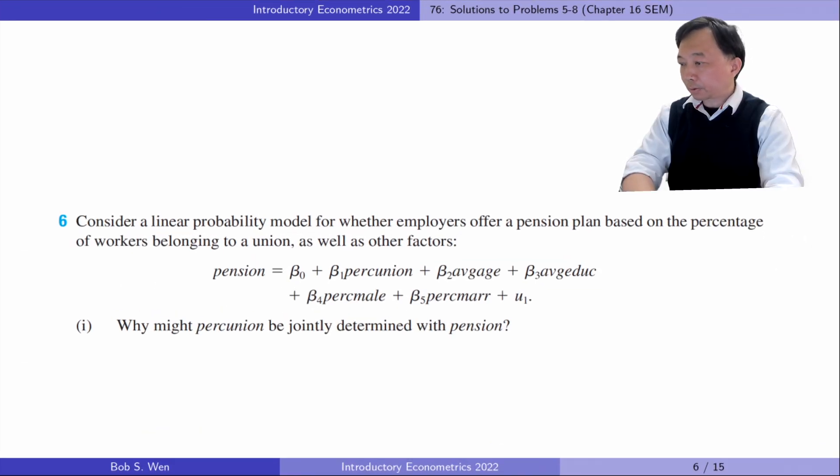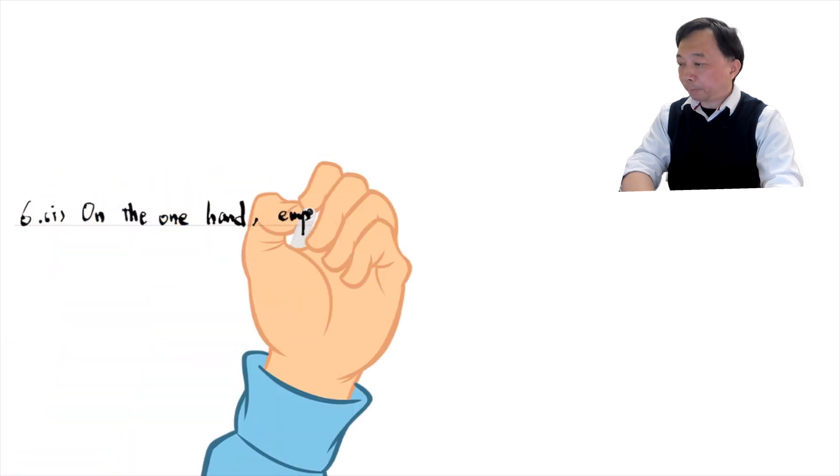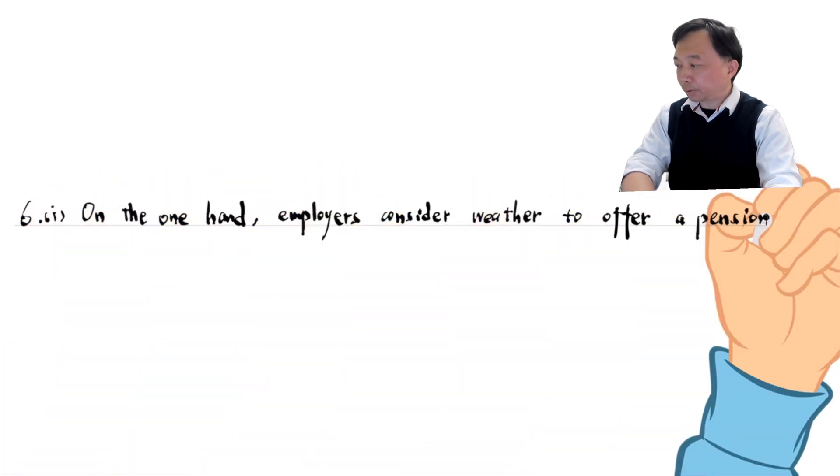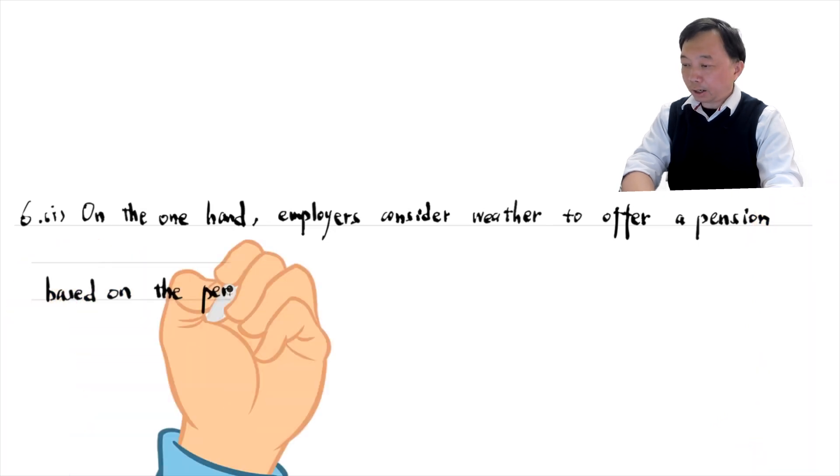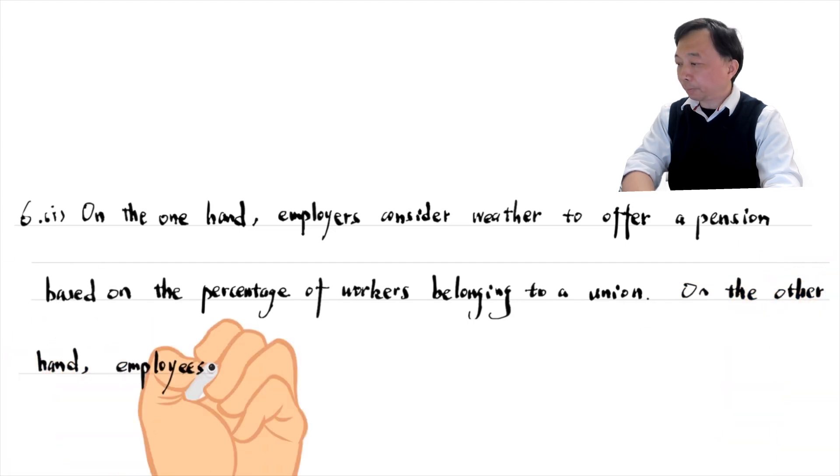Let's solve problem six. Consider a linear probability model for whether employers offer a pension plan based on the percentage of workers belonging to a union, as well as other factors. In part one, why might the percentage of workers belonging to a union be jointly determined with pension? On the one hand, employers consider whether to offer a pension based on the percentage of workers belonging to a union. On the other hand, employees determine whether to join the union based on whether they receive a pension.